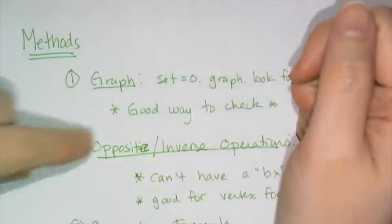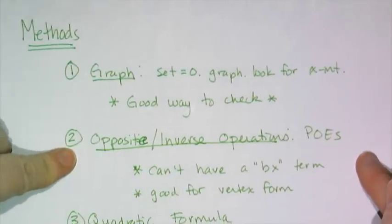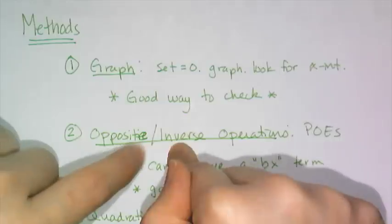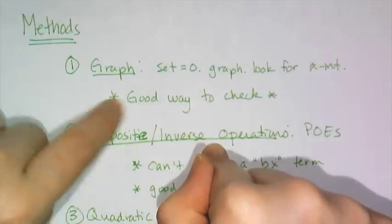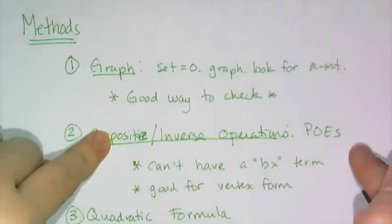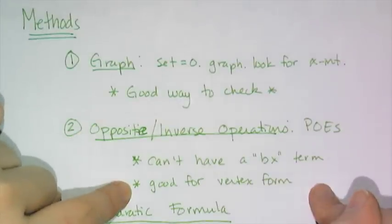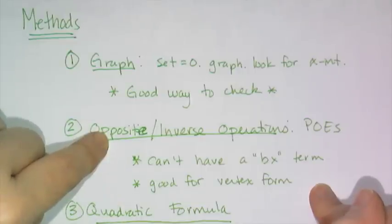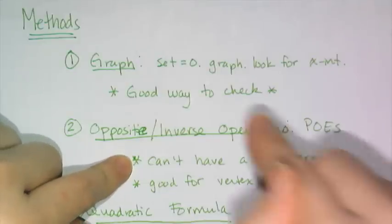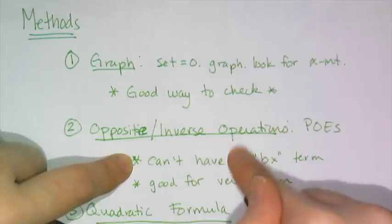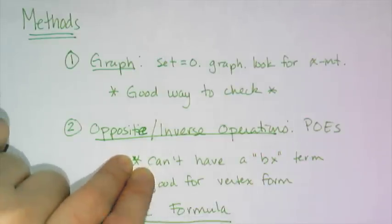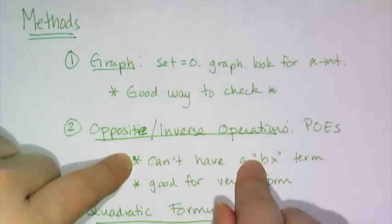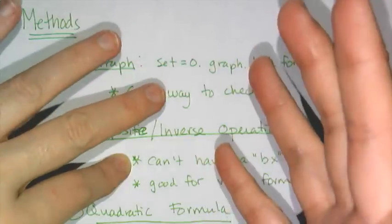Now a second way of solving is something that's very familiar to you. It's using the properties of equality in an opposite or an inverse fashion to undo what has been done to x. So that means you divide both sides, you multiply both sides, you add or subtract from both sides. Now here's the deal with the POES. It is great for vertex form. So if I give you a quadratic equation that's in vertex form, then you can totally use opposite operations. But if I give you standard form, you can't use the POES, because this bx term messes everything up. So if your quadratic equation has the bx term, that linear term, you cannot use opposite operations.